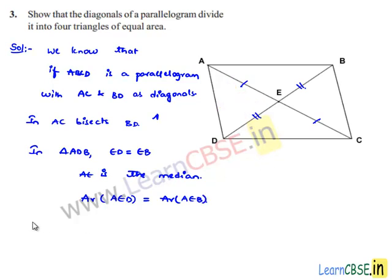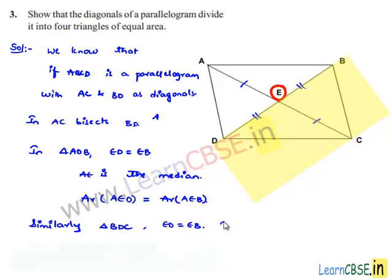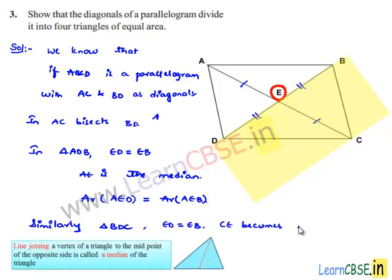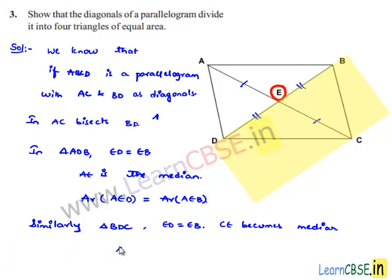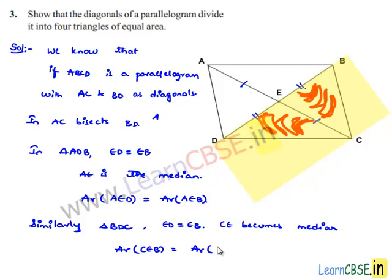Similarly, if we consider triangle BDC — in triangle BDC, ED is equal to EB. Therefore, CE becomes the median, and this median divides the area in equal ratio. That is, area of triangle CEB will be equal to area of triangle EDC. Let these be equation number one and equation number two.